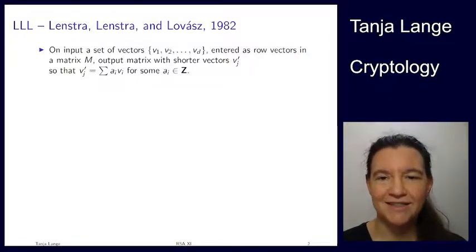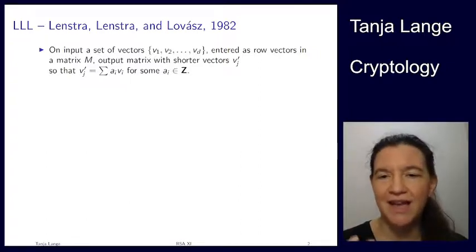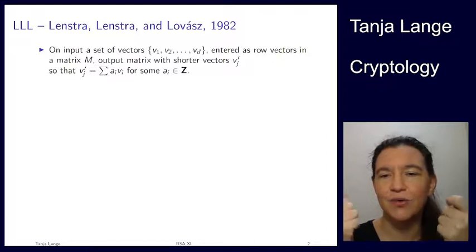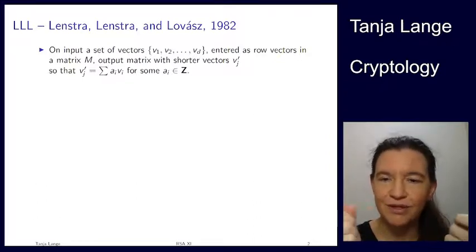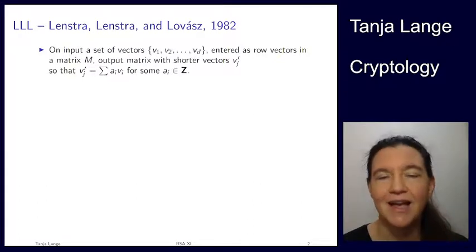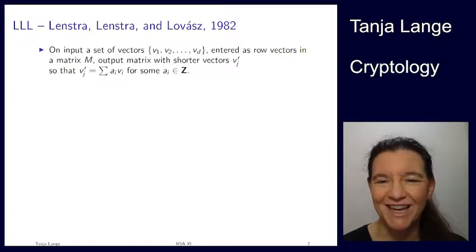There are lots of math details in this lecture, but stay tuned — at the very end there is another attack, another application of the Coppersmith method: finding stereotype messages. If somebody gives you a form where only the last part is different and it was encrypted without any fancy padding like OAEP, we show how this can be broken.